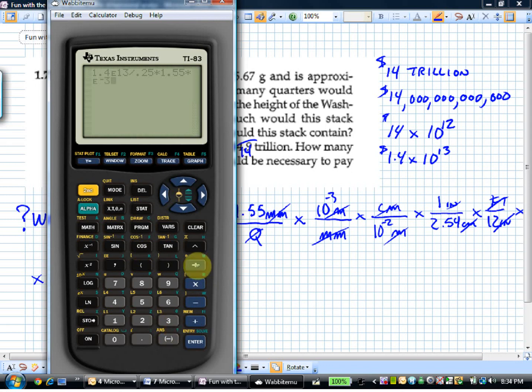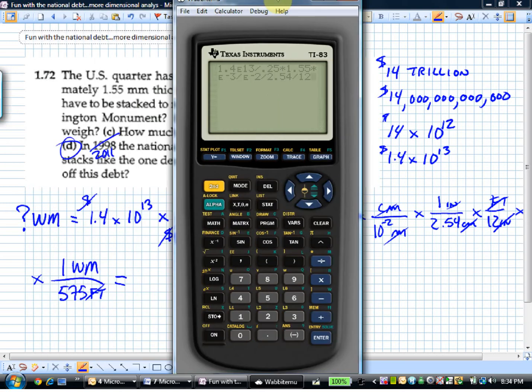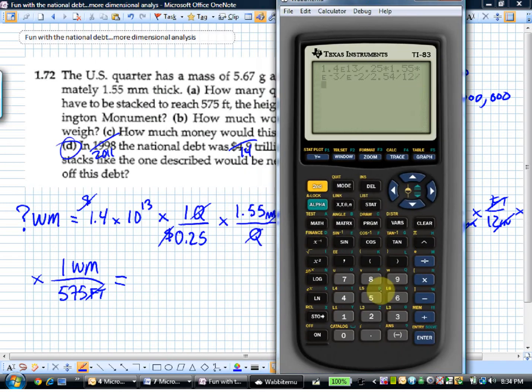We're going to multiply that by 10 to the minus 3. Use the exponential button, 10 to the minus 3. Divide by the same thing again, e to the minus 2, divided by 2.54, divided by 12.